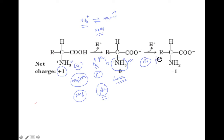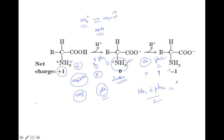If you add pKa₁ plus pKa₂ and divide by two, you get the average of plus one and minus one, which comes to zero — and that is the pI (isoelectric point). Now let's take glycine as an example. Glycine is the simplest amino acid with no R group, only hydrogen, which simplifies everything. At pKa₁, the molecule dissociates from a plus-one charge to zero charge.